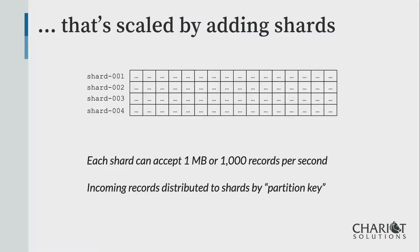Another nice thing about Kinesis is it's very scalable. You have shards, and each shard can accept up to a thousand messages per second or one megabyte per second — mix and match. So if your messages are two kilobytes in size, each shard can accept 500 messages per second. If you have higher volume, you simply add shards to match the volume that you need.